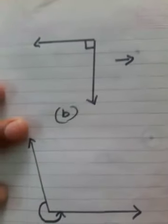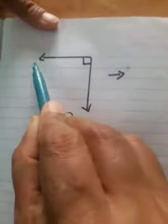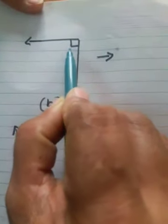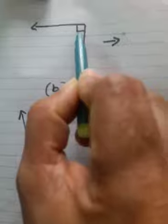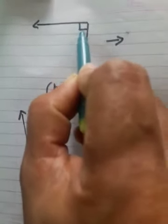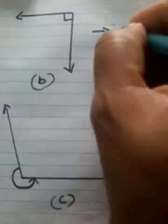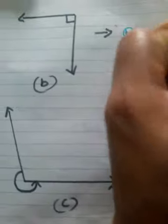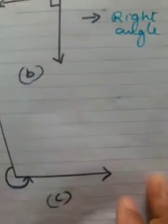Second figure: this symbol denotes 90 degree. The measure of this angle is 90 degree, so it is called a right angle.